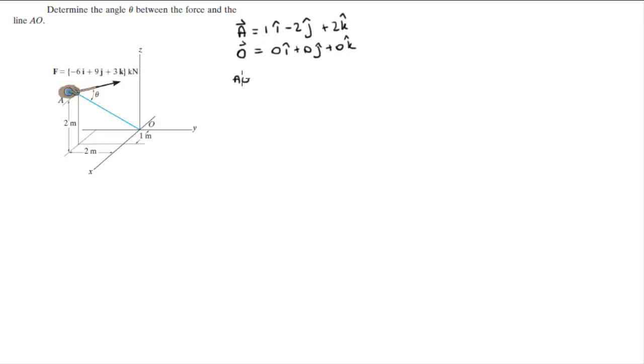So vector AO is vector O minus vector A, but since O is the origin it's negative vector A, so it's just the opposite of A, minus 1i plus 2j minus 2k.